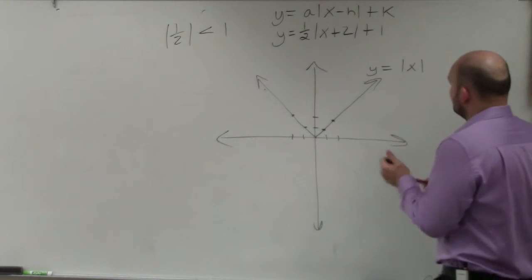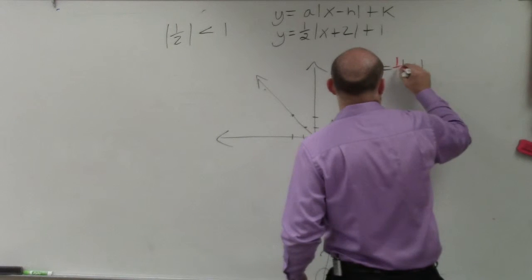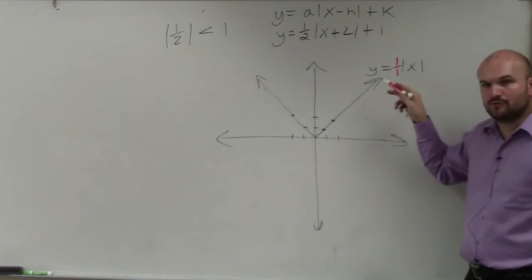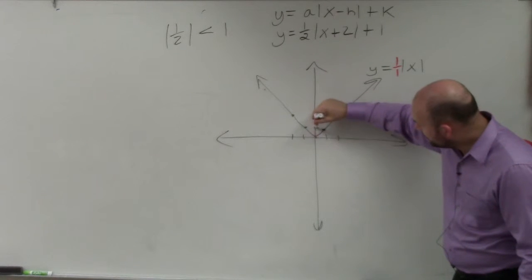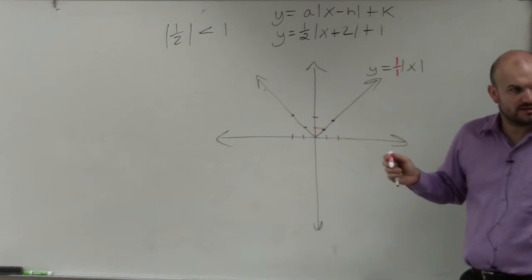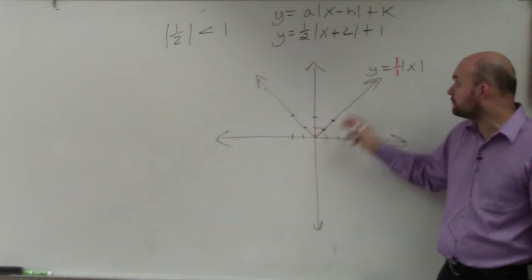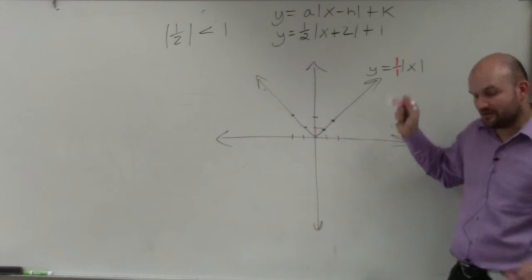Well, if you guys look at this, you guys can think of the a in the parent graph as 1 over 1. Basically, you're going up 1 over 1, right? So the slopes here of the absolute value graph of the parent graph is just 1 over 1, which is basically right there. It's kind of written in there.